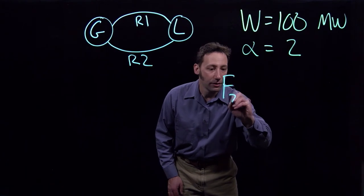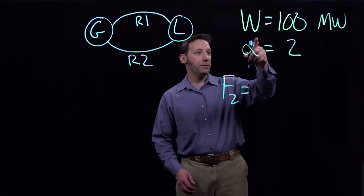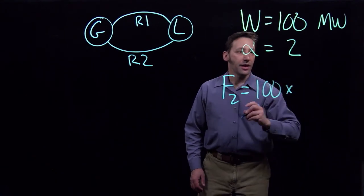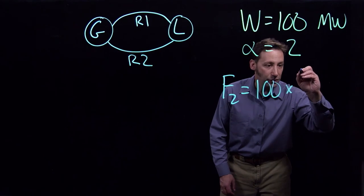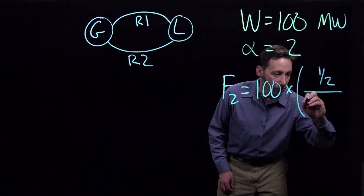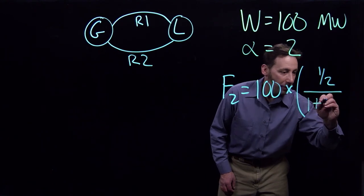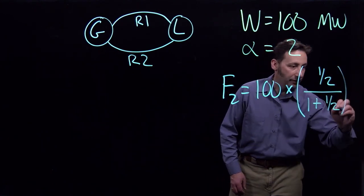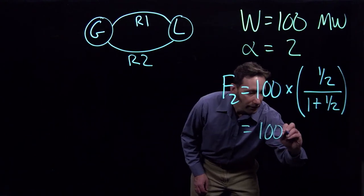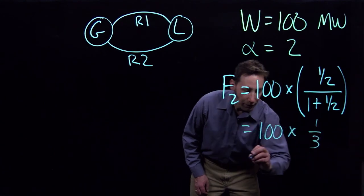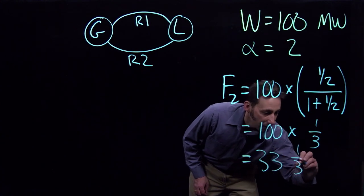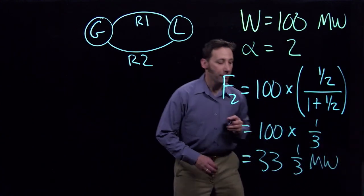For the flow on line two, that's going to be equal to w, or 100, times the distribution factor for line two, which is one half divided by one plus one half. So this is going to be equal to 100 times one-third, which is 33 and one-third megawatts.